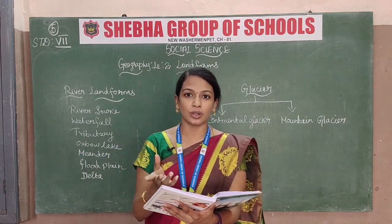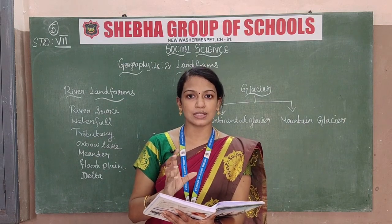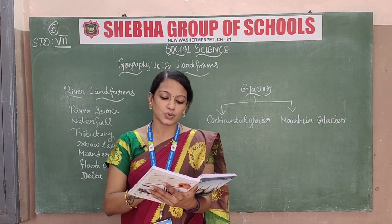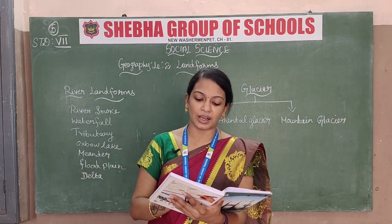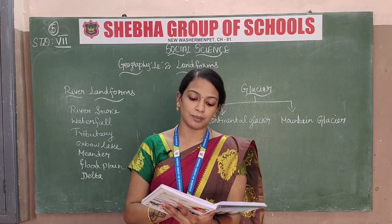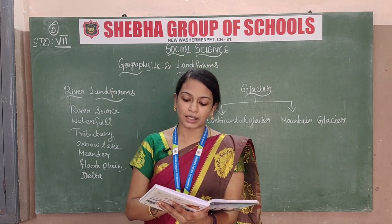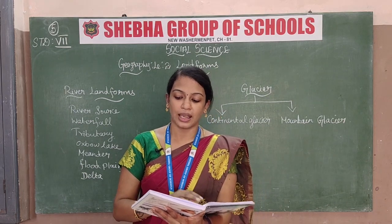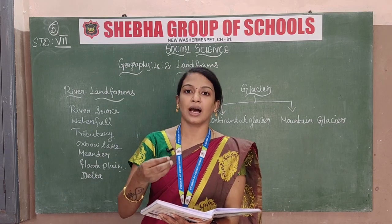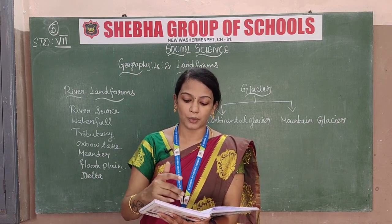And next is the U-shaped valley. And moraine — the material carried by the glaciers such as rocks big and small, and sand deposited, is called moraine. Actually big rocks, small rocks, and sands — everything deposited in the mountains is called moraine.